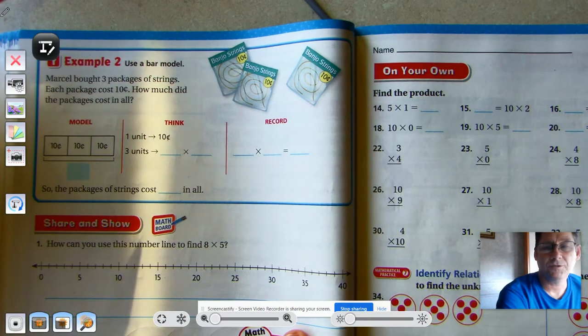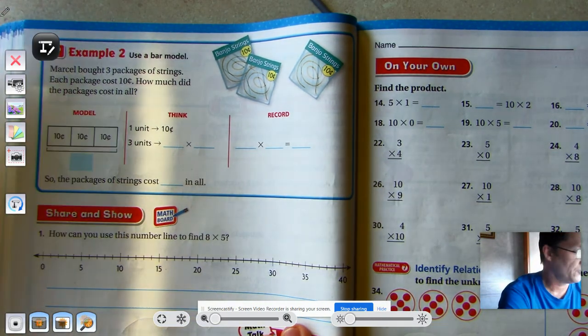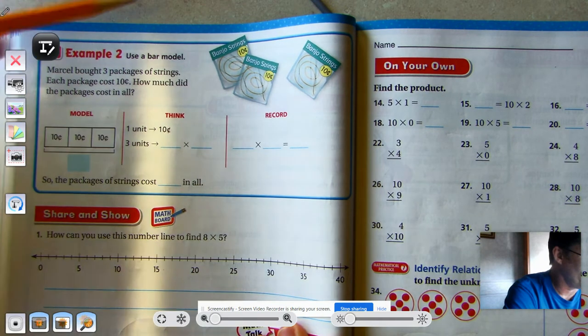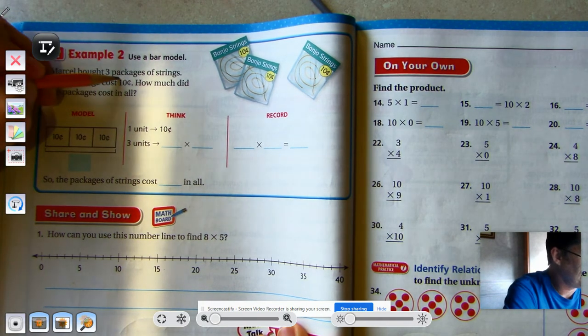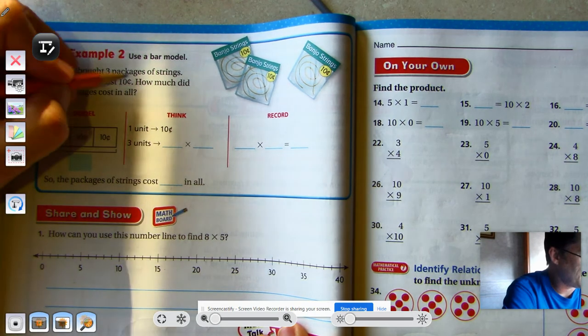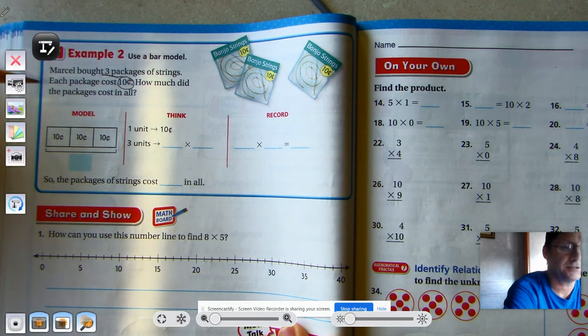Another way we can do it. So we've talked about skip counting using a number line. We can also use a bar model that we're familiar with. Marcel bought three packages of string. Each package cost 10 cents. How much did the packages cost in all?